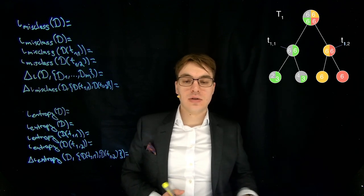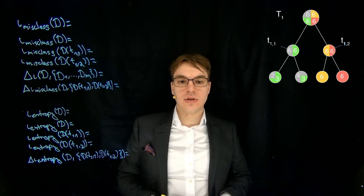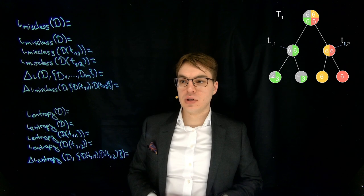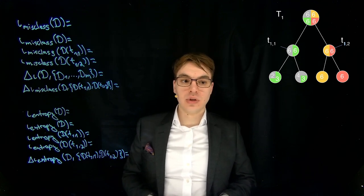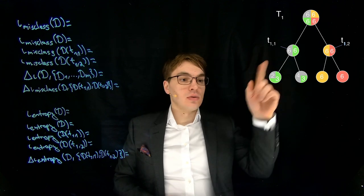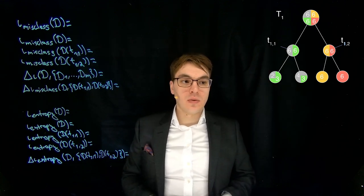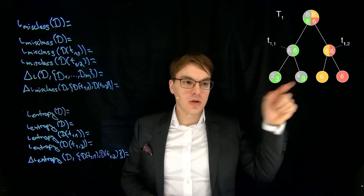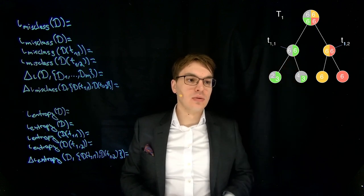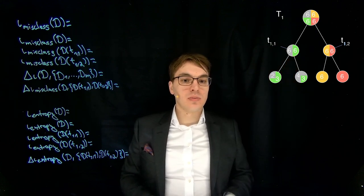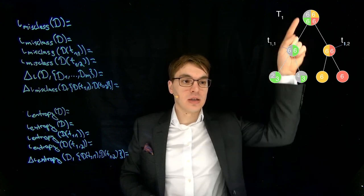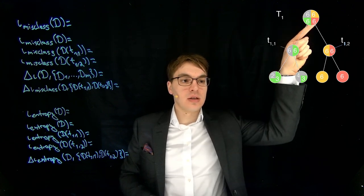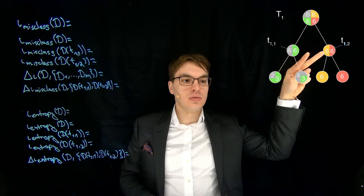Let's have a look at two definitions of impurity and also the computation of impurity reduction. We have one decision tree and we want to compute the impurity reduction of the first splitting — only the splitting that goes from here to here.